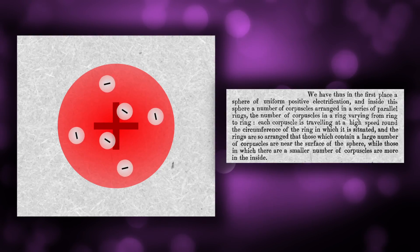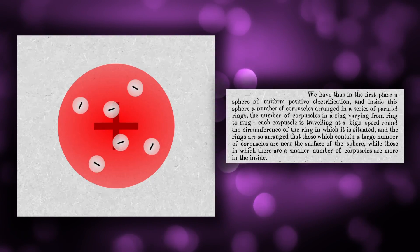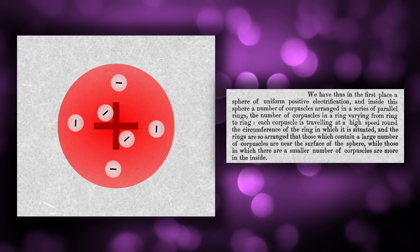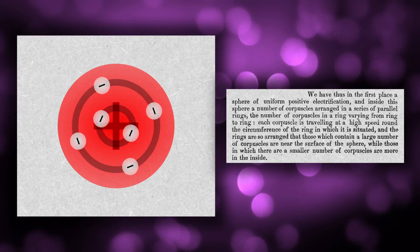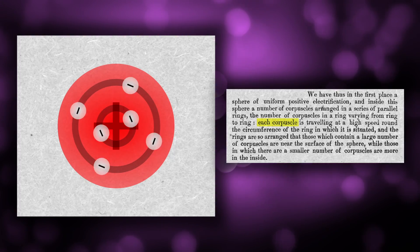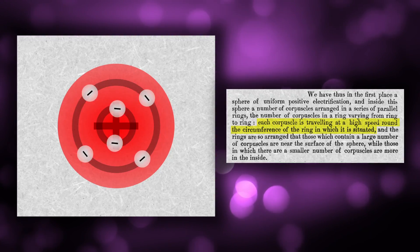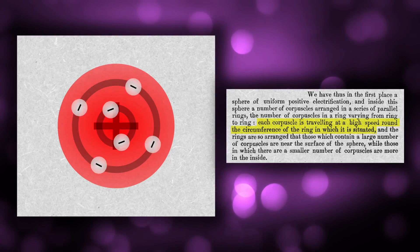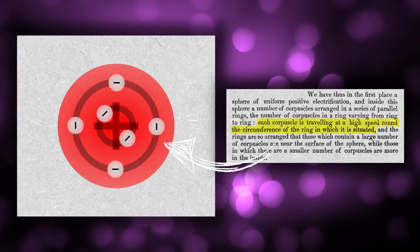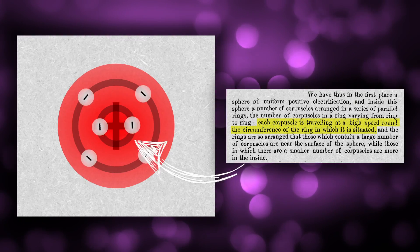He described his idea as follows: We have thus in the first place a sphere of uniform positive electrification, and inside this sphere a number of corpuscles arranged in a series of parallel rings, the number of the corpuscles in a ring varying from ring to ring. Each corpuscle is travelling at a high speed round the circumference of the ring in which it is situated, and the rings are so arranged that those which contain a large number of corpuscles are near the surface of the sphere, while those in which there are a smaller number of corpuscles are more in the inside.